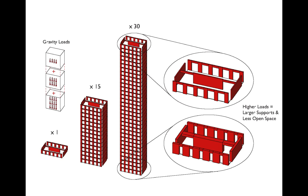One way to think about this: going from 30 to 31 stories isn't like adding a story at the top—it's like adding a story at the bottom. We need columns carrying the weight of the entire building. If loads get out of hand, the first few floors end up mostly structure, where columns and shear walls become so large there's no space left for the program we want to put there.